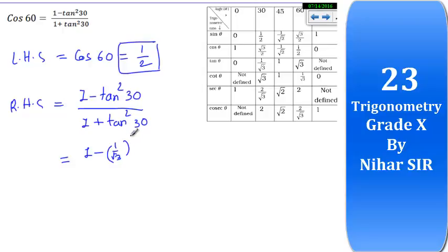Root 3 square in denominator, 1 plus 1 upon root 3 square. So it will be 1 minus, 1 squared is 1, root 3 squared is 3. Here 1 plus, 1 squared is 1, root 3 squared is 3. So now it will be like this.